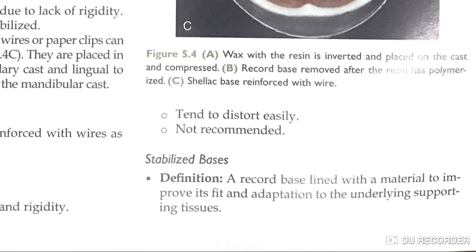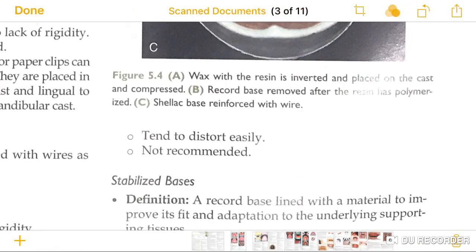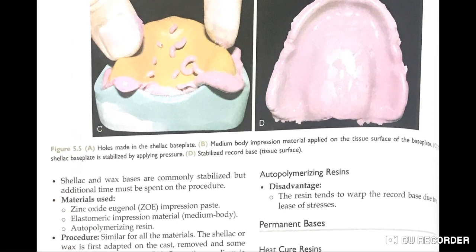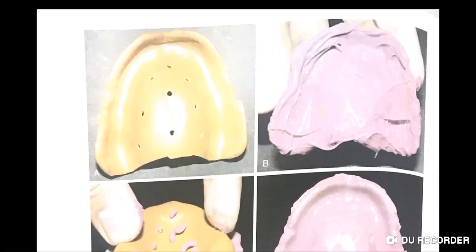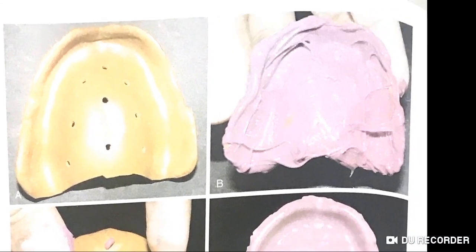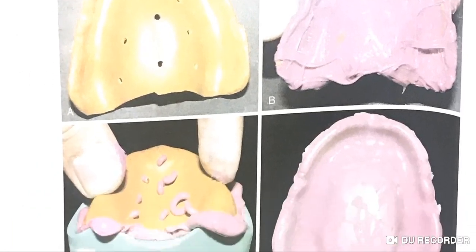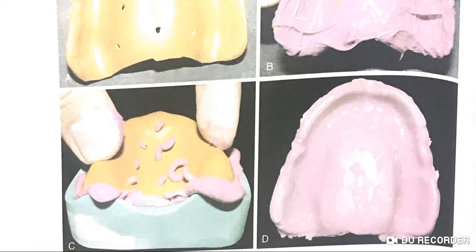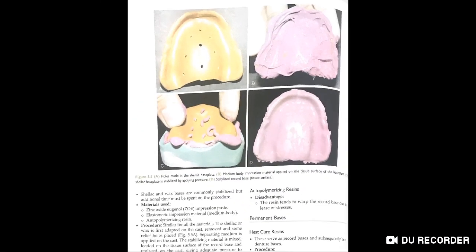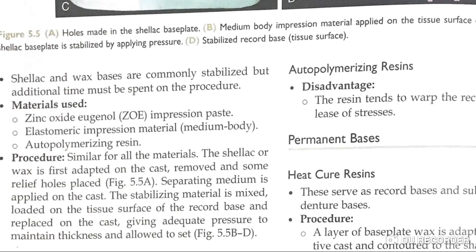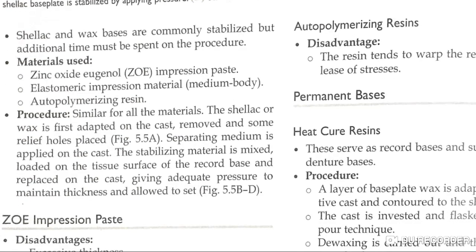What is the stabilized base? The record base is lined with materials to improve its fit and adaptation to underlying supporting tissues. Shellac and wax bases are commonly stabilized. The procedure involves making holes in the shellac base plate, applying medium body impression material on the tissue surface, and stabilizing by applying pressure. Materials used include zinc oxide eugenol impression paste, elastomeric impression material (medium body), or autopolymerizing resin.